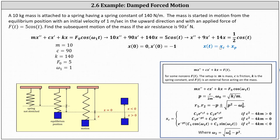Recall the general solution is in the form x_c + x_p, where x_c is the complementary solution and x_p is the particular solution. Now we determine x_c. The next step is to determine p, which equals c divided by 2m, as well as ω₀, which equals the square root of k divided by m. And finally, r₁ and r₂, the roots of the characteristic equation, which equal negative p plus or minus the square root of p squared minus ω₀ squared.